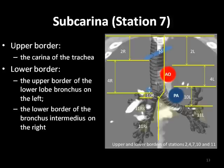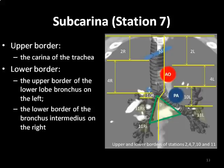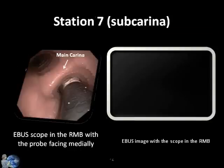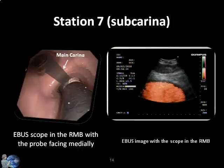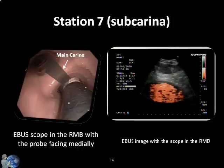Station 7 is naturally examined next. The upper border of this subcarinal nodal station is the main carina of the trachea. Its lower borders are the lower border of the bronchus intermedius on the right and the upper border of the lower lobe bronchus on the left. To visualize Station 7, the scope is placed in the proximal right or left main bronchus with the transducer oriented medially. In this example, the scope is in the right main bronchus and the lymph node is seen above the left atrium.